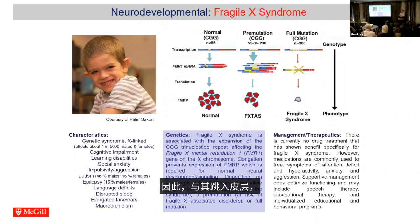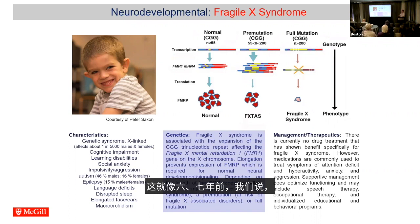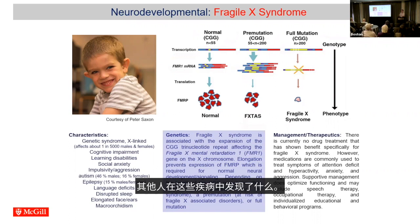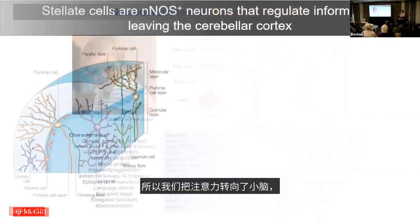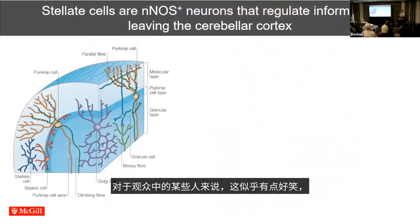Rather than jumping into the cortex, hippocampus, and prefrontal cortex — which is where everybody else seemed to be focused about six or seven years ago — we said that if we do that we're only going to find what everybody else is finding. So why don't we take a slightly different approach? We turned our attention to the cerebellum, which may seem a bit funny, but it made a lot of sense to us for a couple of reasons.